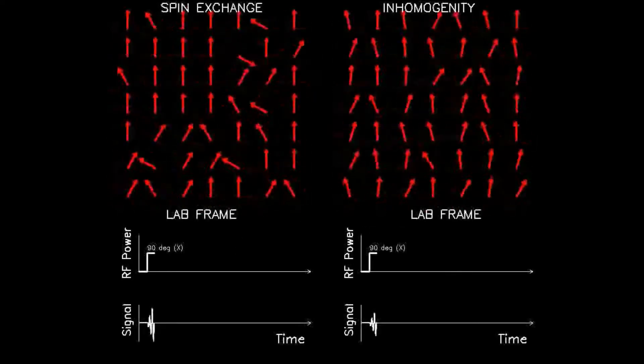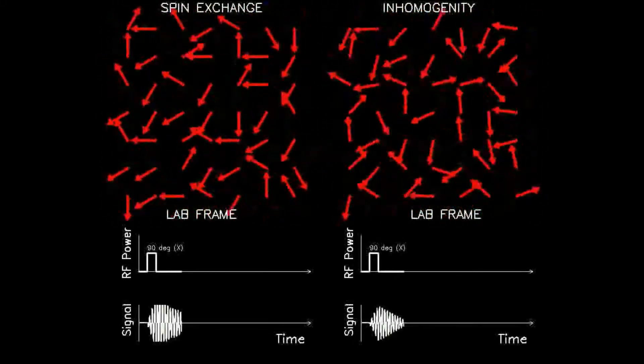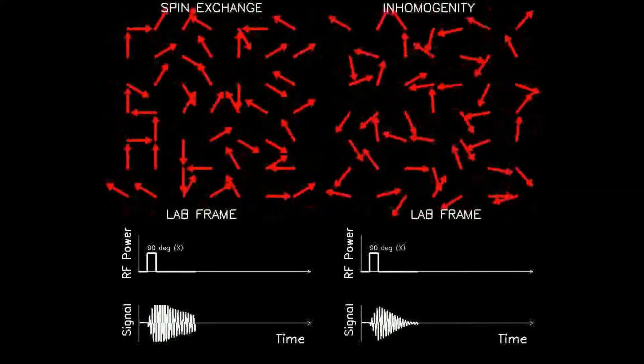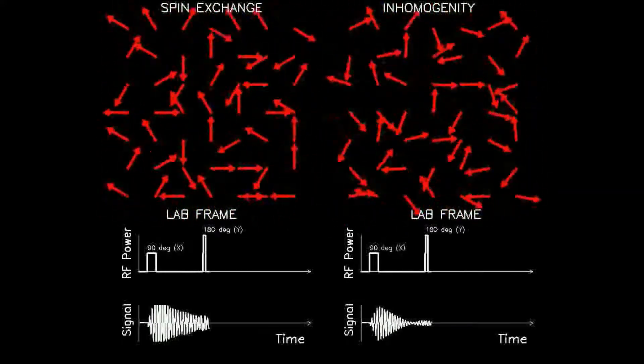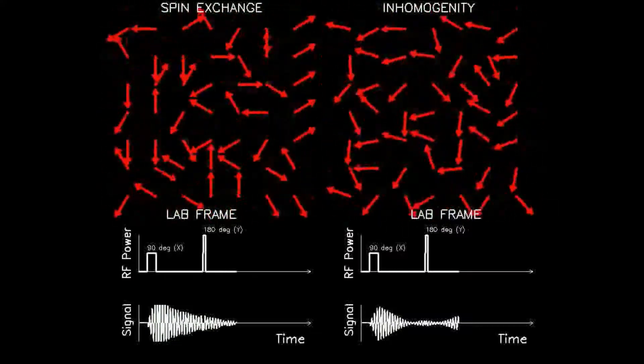In practice, it is not possible to produce an image using the signal from free induction decay, and for several reasons, the signal emitted from an echo is used. The two most common methods use a spin echo and gradient echo.